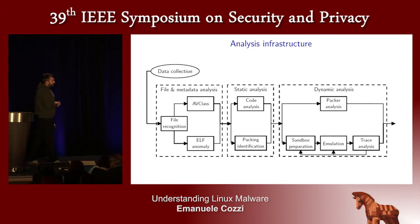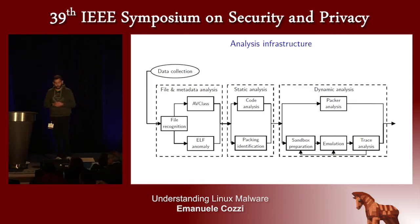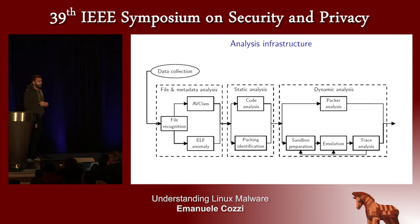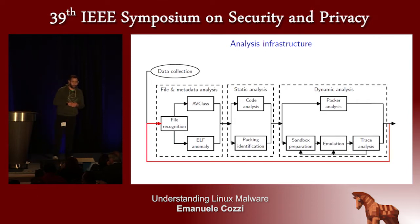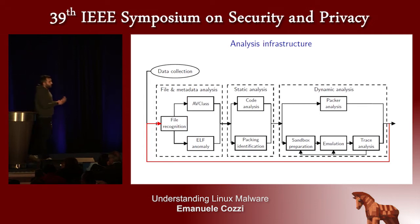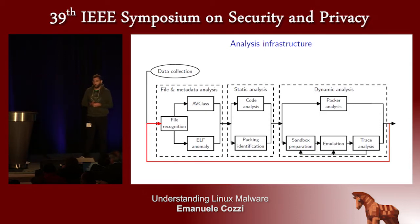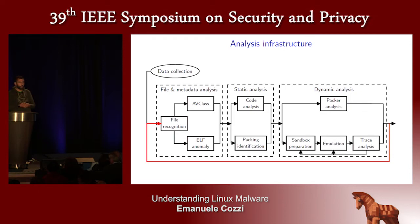We developed an analysis infrastructure — a pipeline — which was quite difficult and is the result of endless iterations. Initially we thought of creating this pipeline to answer some questions, but the answers it gave us were used to readapt and evolve the pipeline again to analyze more of the malware we have. Through this pipeline, we analyze ELF files, extract meaningful information, run static analysis jobs, and finally run the Linux malware dynamically.